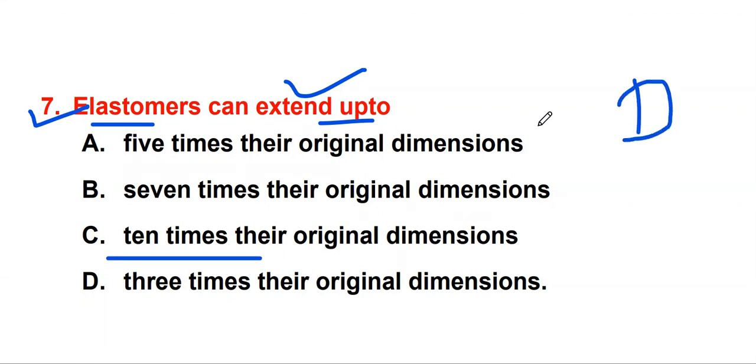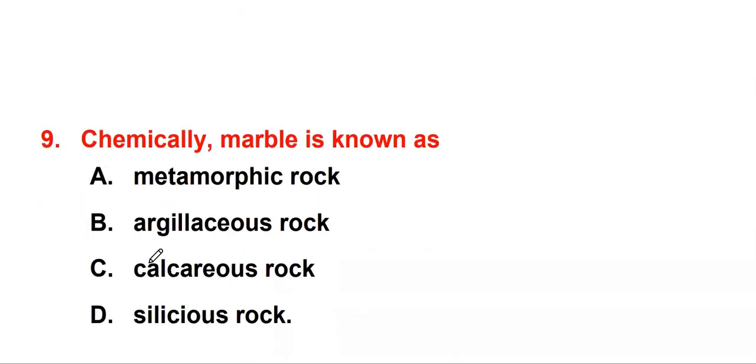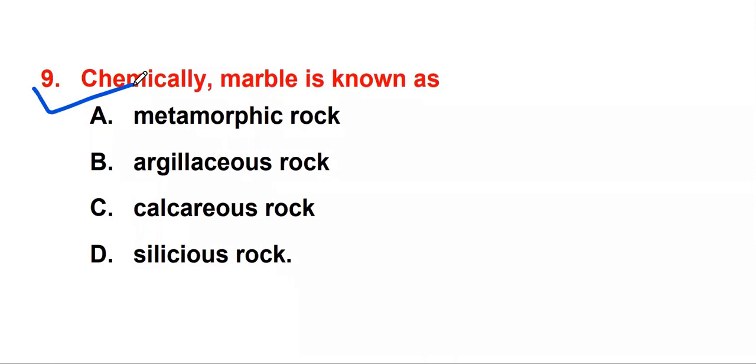Bitumen felt - answer is all the above. It is used as waterproofing material, is used as damp proofing material, and is made from bitumen and Hessian fibers. So all the above is correct. Technically, marble is known as calcareous rock.